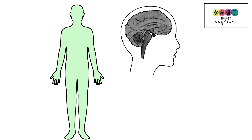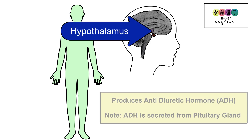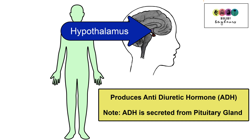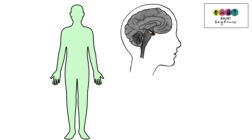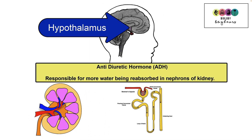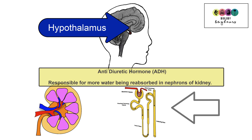In the brain we have the hypothalamus and this gland produces the hormone antidiuretic hormone or ADH. It's very important to know that although it's made by the hypothalamus, it's secreted or released from the pituitary gland. Antidiuretic hormone travels in the blood to the nephrons of the kidneys where it's responsible for more water being reabsorbed.